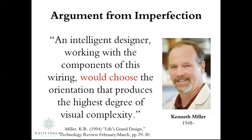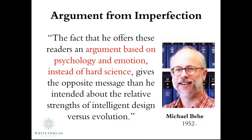It's not a scientific argument — it's a very emotional argument that rests on a psychological claim. Behe writes that the fact that Miller offers his technically sophisticated readership an argument based on psychology and emotion, using expressions such as 'should have,' 'must have,' 'ought to have' instead of hard science, gives the opposite message than he intended about the relative strengths of intelligent design versus evolution. If evolution had a strong case, it wouldn't be using these types of arguments — these are not scientifically grounded arguments.